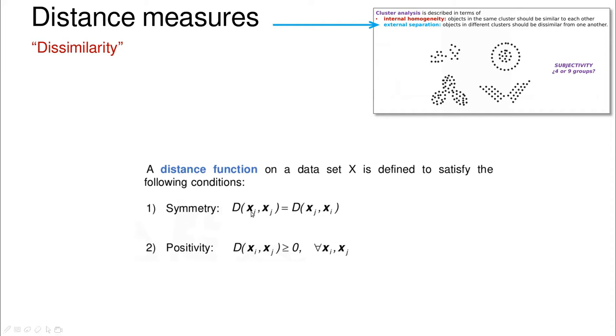One property is symmetry, meaning that the distance from i to j is the same as the distance from j to i, and positivity, that means all the distances are positive. The only possibility to have zero distance is that xi and xj are the same location.